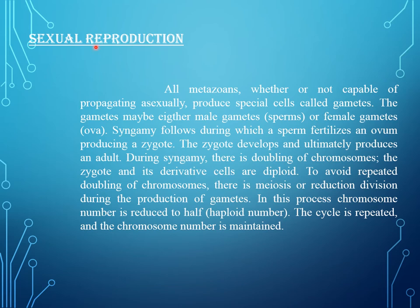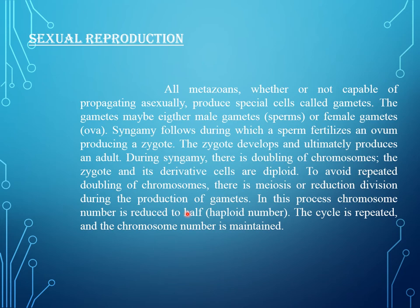Now, sexual reproduction. All metazoans, whether or not capable of propagating asexually, produce special cells called gametes. The gametes may be either male gametes or female gametes. During syngamy, sperm fertilizes ovum to produce a zygote. The zygote develops and ultimately produces an adult. During syngamy, there is doubling of chromosomes; the zygote and its derivative cells are diploid. To avoid repeated doubling of chromosomes, there is meiosis or reduction division during the production of gametes, in which chromosome number is reduced to half. The cycle is repeated and the chromosome number is maintained.